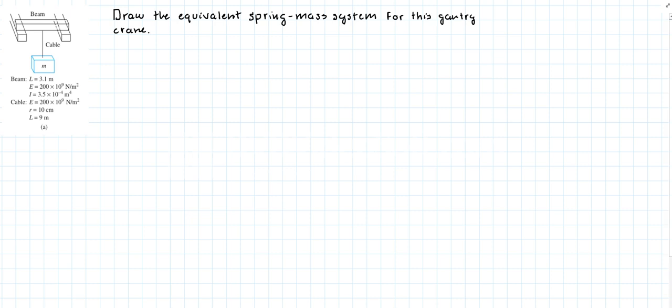What this means is that we are asked to draw an equivalent one degree of freedom system composed of one spring that has a stiffness equivalent to the stiffness contribution of the beam and the cable. In this case we have two contributions for the stiffness: one from the beam and the other one from the cable.